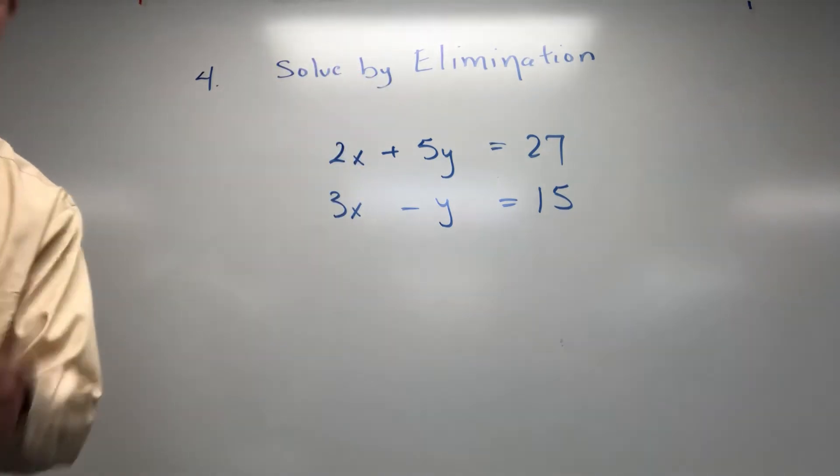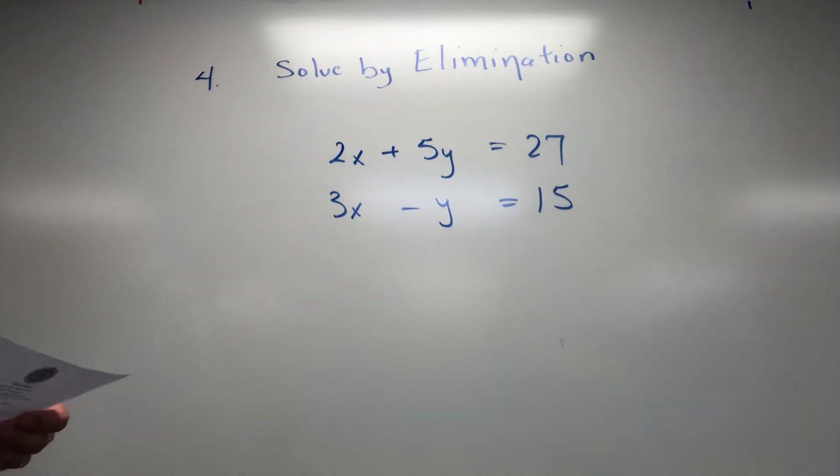There's only two of them. It's not one of the triple-deckers. 2x plus 5y equals 27, 3x minus y equals 15. Excellent.